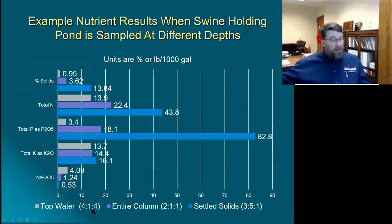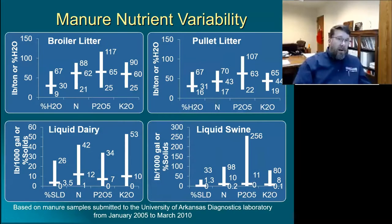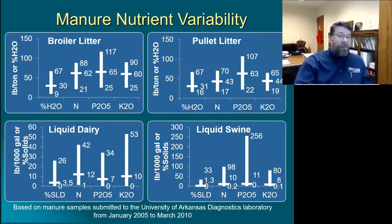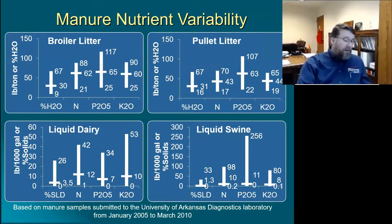Looking at fertilizer ratios: top water was 4-1-4, the entire column was 2-1-1, and settled solids was 3-5-1. These numbers were extracted from a database of manure analyses submitted to the University of Arkansas lab from 2005 to 2010, representing max, min, and average values for broiler litter, pullet litter, liquid dairy manure, and liquid swine manure.